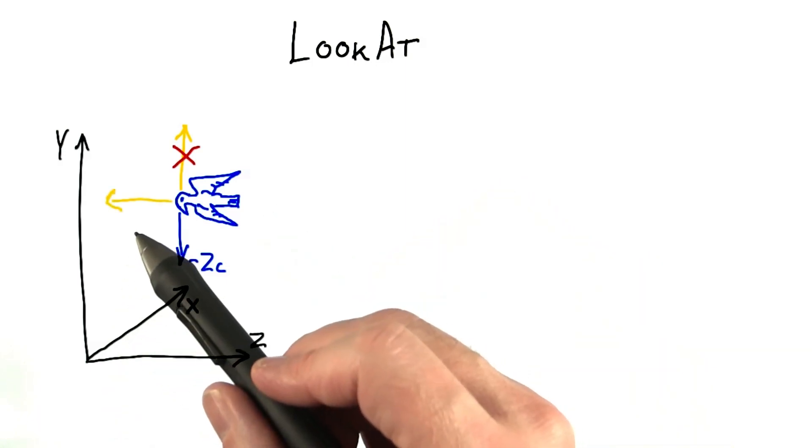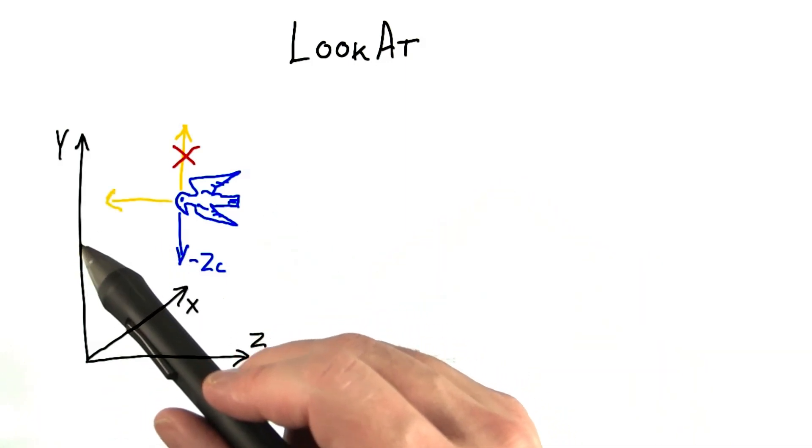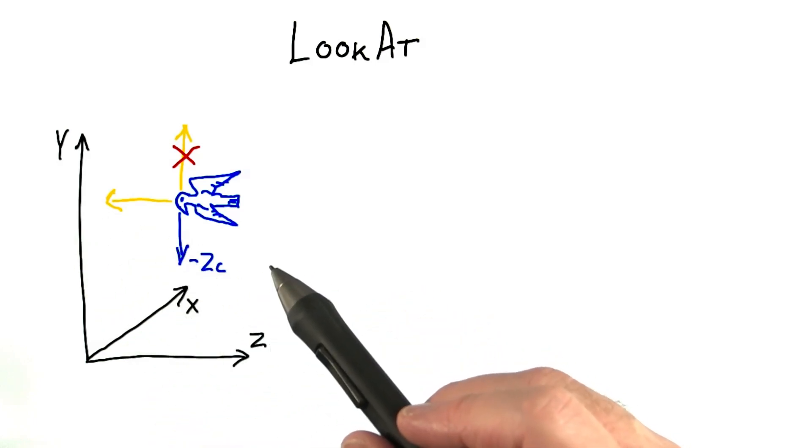In this case, our up vector is more like the direction pointing out of the top of our hawk's head, the direction it's flying. Now that the up vector is not parallel to the look at direction, we can form a good frame of reference for the hawk.